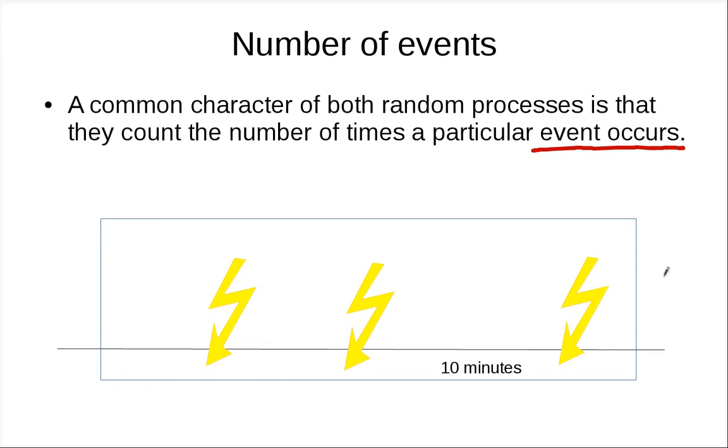If you look at the lightning example, we have a range of 10 minutes, and we count how many lightnings you've heard. That's three lightnings, for example. We would like to model this number of lightnings using probability theory.